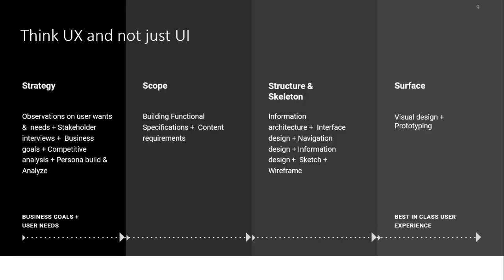Once this is done, we move on to the scope where we build functional specifications and content requirements. Then we move on to the structure and skeleton where we formalize the information architecture, interface design, navigation design, information design, sketches and wireframes. Finally, we move into the surfacing phase where we do the visual design and prototyping, and the result will give us the best user interface experience.